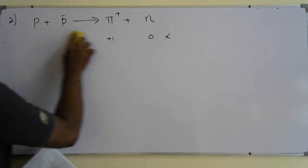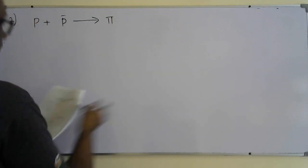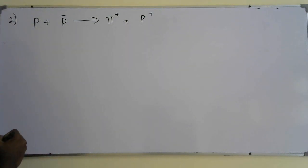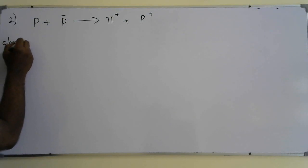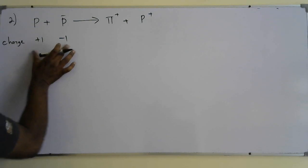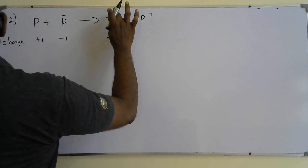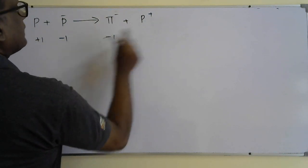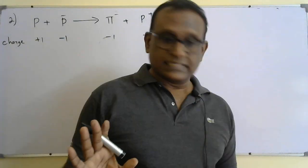For answer B — negative pion and proton: proton is +1, antiproton is −1, total charge before is zero. After: pi-minus is −1 and proton is +1, so charge is conserved. But we also need to check baryon number.